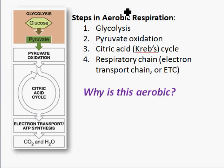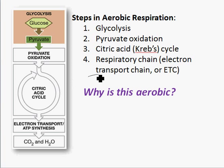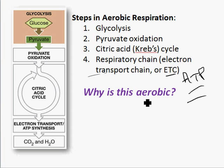We had glycolysis first, and we had pyruvate oxidation, the citric acid cycle, and then we had the respiratory chain. This is where lots and lots of ATP were produced — the ETC, lots of ATP. This is aerobic respiration, because aerobic means oxygen is required; O2 is needed.